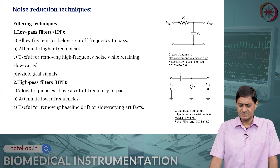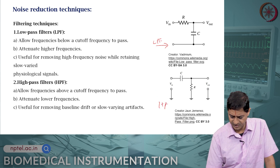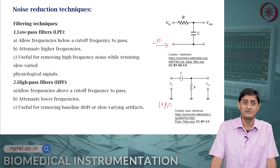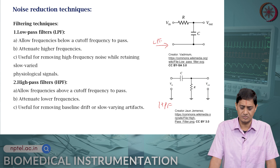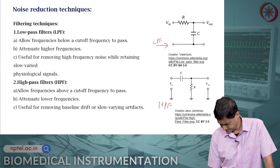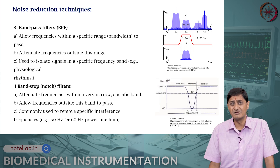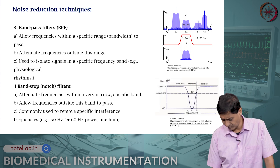There are different filtering techniques. A low pass filter allows frequencies below a specific cutoff frequency and attenuates higher frequencies — useful for removing higher frequency noise while retaining slow-varying physiological signals. If you need to retain higher frequency signals while removing lower frequencies, you use a high pass filter. Likewise, band pass filters allow frequencies within a particular band to pass while rejecting all others. Band stop or notch filters are used to remove power line interference, for example.